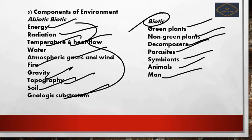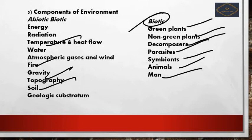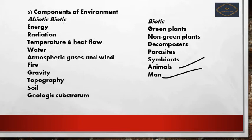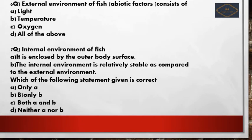The components of the environment are abiotic and biotic. Abiotic includes: energy, radiation, temperature and heat flow, water, atmospheric gases and winds, fire, gravity, topography, soil, geology, and substratum. Biotic includes: green plants, non-green plants, decomposers, parasites, symbiomes, animals, and man.